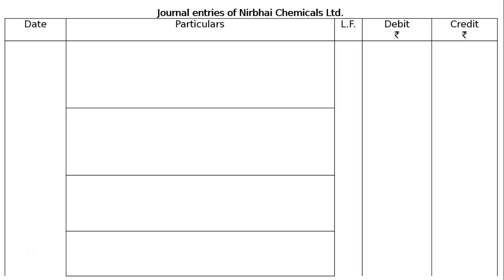The question is: Nearby Chemicals Ltd. issued Rs. 10,00,000 worth of 6% debentures of Rs. 50 each at a premium of 8% on 30th June 2016. How much amount should be transferred to Debenture Redemption Reserve before redemption of debentures, and also state how much amount should be invested in specified securities?